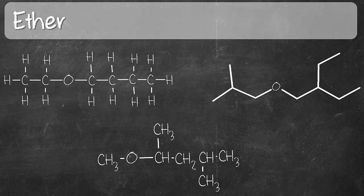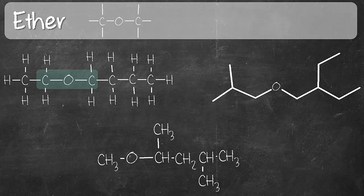Moving on, we have ether, which is not to be confused with ester. Ether has a functional group where you have an oxygen in the center and it's sandwiched between two carbons. In identifying ether, we look for compounds that have oxygen and we look at the atoms connected to that oxygen. If the two atoms directly connected to that oxygen are both carbons, that is a representation of ether. In all three structures shown, oxygen is sandwiched between two carbons.